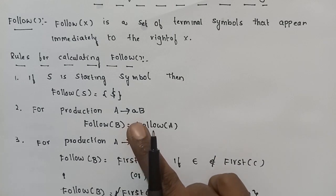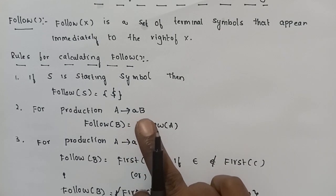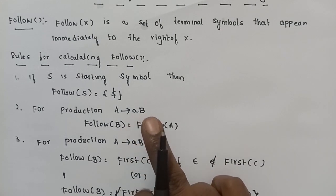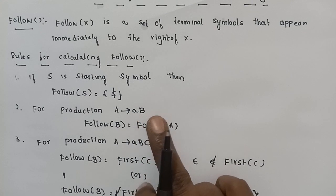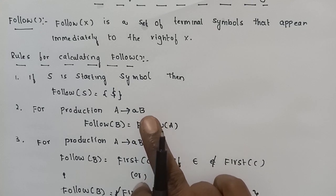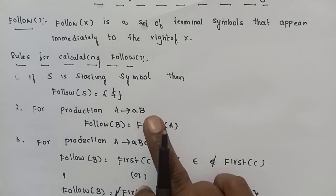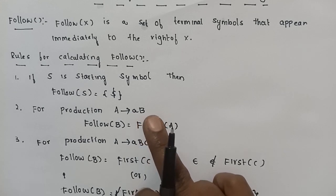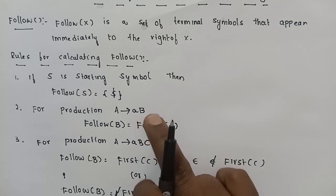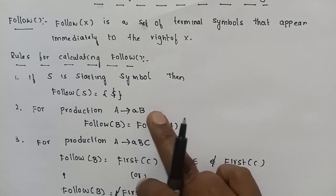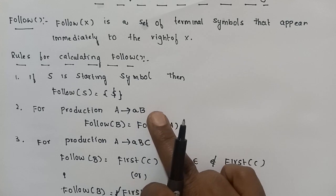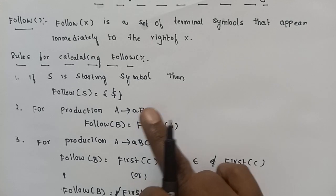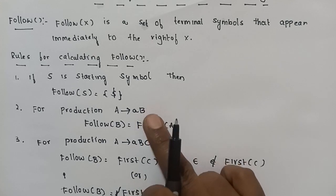Second rule: For a production A → aB, where a is a terminal and B is a non-terminal, we calculate FOLLOW of B. If B has a terminal immediately to its right, then that terminal is in FOLLOW of B.